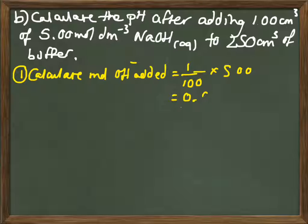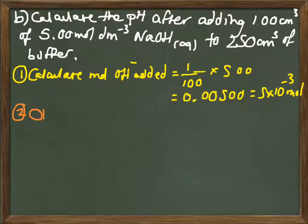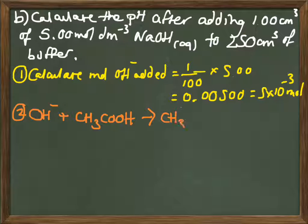First of all, work out your moles added. It'll be straightforward: 1 over 1000 times 5. It looks like I've written 1 over 100 there, it should be 1000. That'll give you 0.00500, or 5 times 10 to the minus 3 moles.